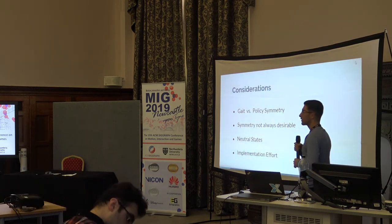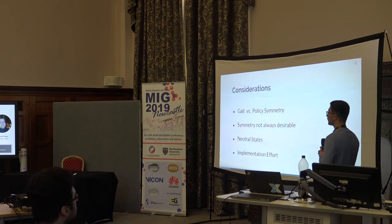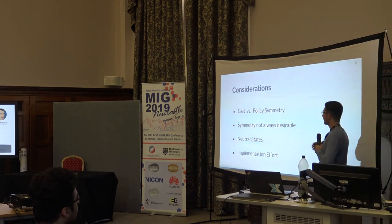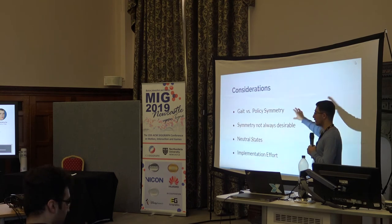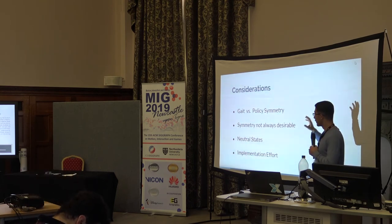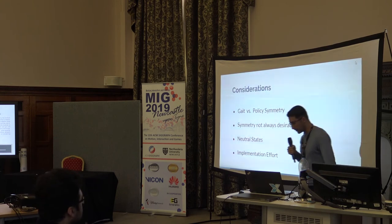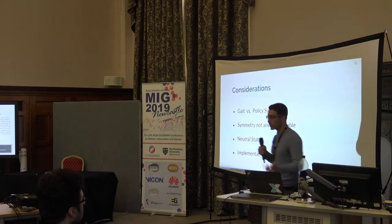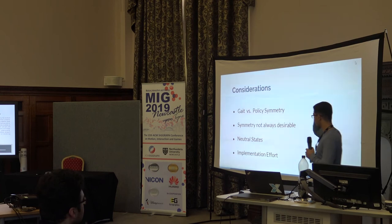There are some things to consider or discuss. The first is that what we are enforcing is what I call policy symmetry, and that's a little bit different from our goal of gait symmetry. These two things are not always the same — you can have a completely symmetric policy but still get an asymmetric gait. For example, if you have a completely symmetric policy and start from a certain pose, it might just hop to the right foot. If you change the initial position, you can get a different walk but not a symmetric gait.